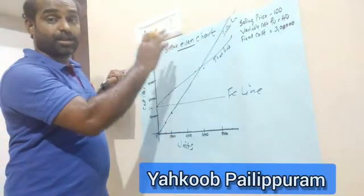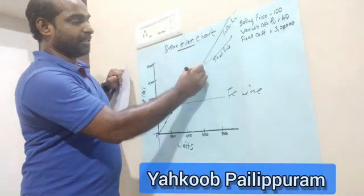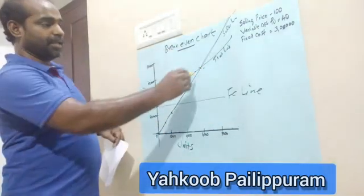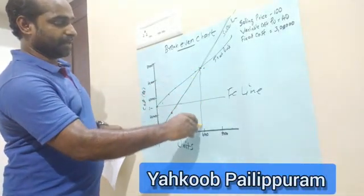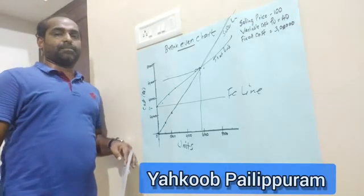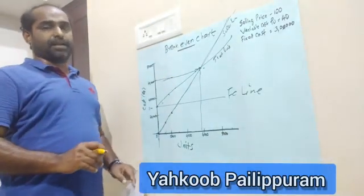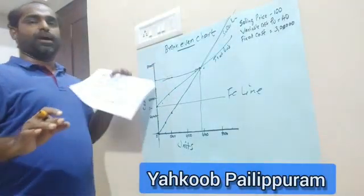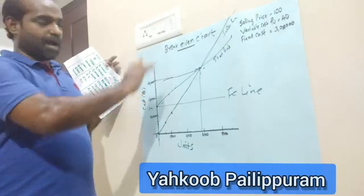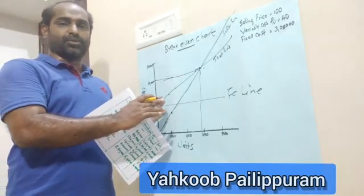The point where the total cost line and the sales line intersect is the break-even point. From this intersecting point, we can read off the break-even units on the X-axis and the break-even sales value on the Y-axis. This is how we use the break-even chart. You can use the graph or the formula to verify the exact figures and clarify any doubts.